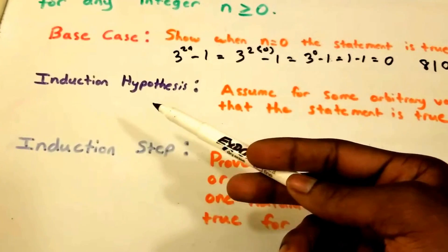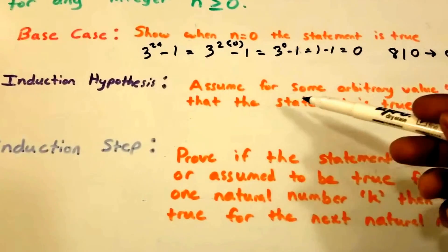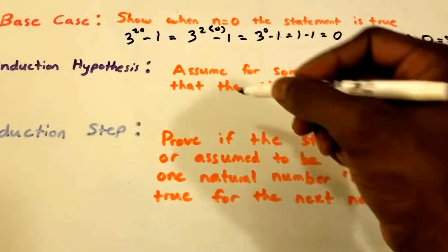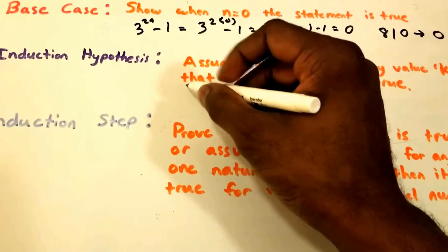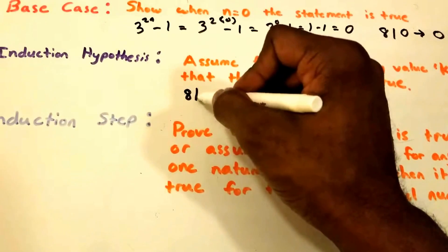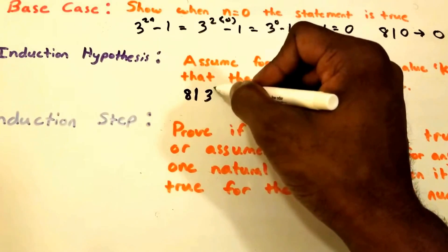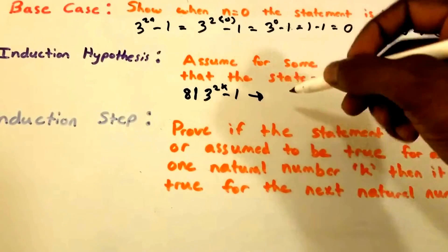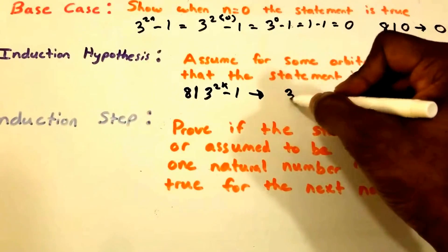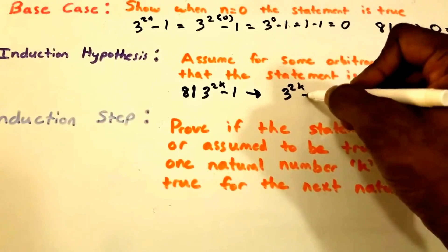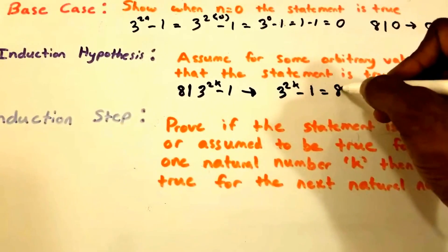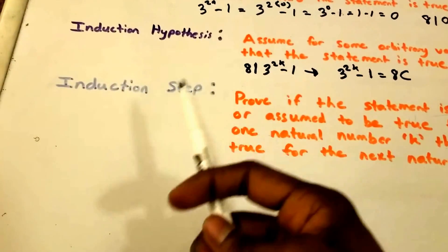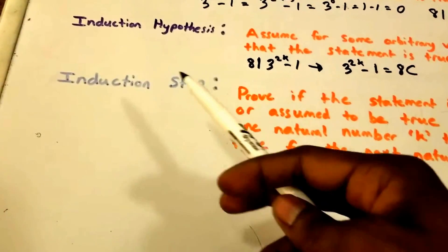Next up we want our induction hypothesis. Here we assume for some arbitrary value K that the statement is true. So we assume that 8 divides 3 to the power of 2K minus 1, which implies that 3 to the power of 2K minus 1 is equal to 8 times some constant C.